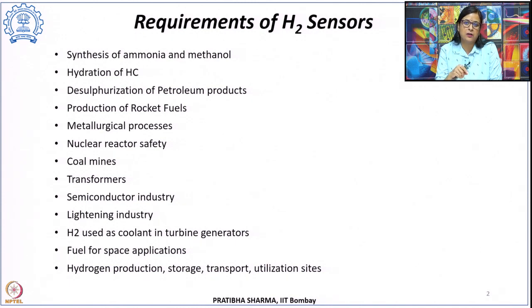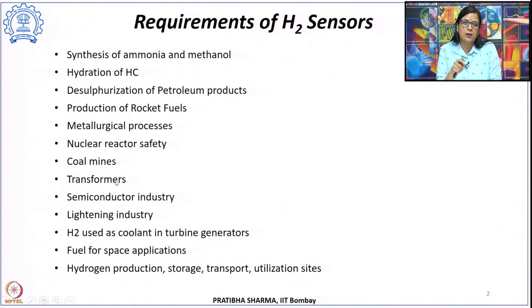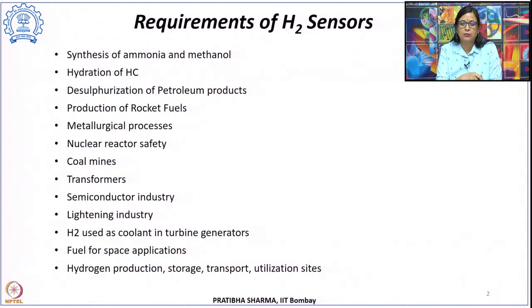During fuel processing, it is required to know the hydrogen content in coal mines — for example, from methane or coal dust explosions. Identifying hydrogen concentrations is essential. Hydrogen in very small traces must also be identified from transformers for early fault detection, and it must be sensed in the semiconductor industry and lighting industry, where it acts as a contaminant.